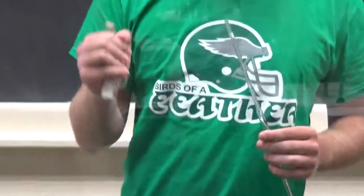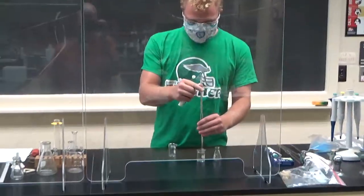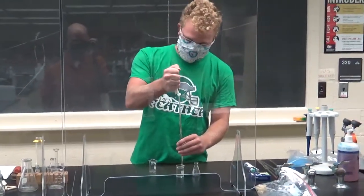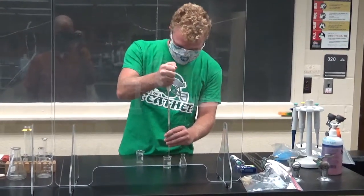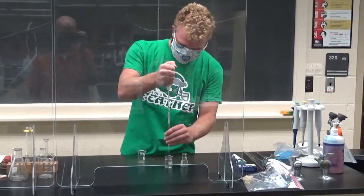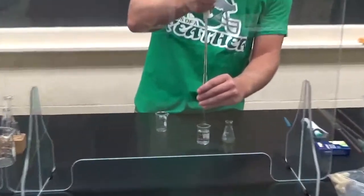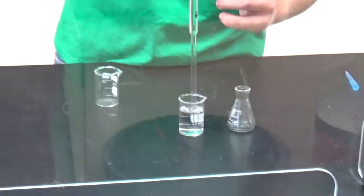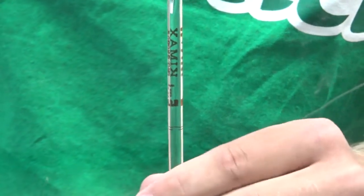When you want to pipette into something, you always want to make sure you clean out your bulb to make sure there's nothing in there. When you want to pipette, you slowly draw up. You place the pipette bulb on top of the pipette and slowly draw up the solution or water. You want to come past the line here, that's five milliliters.